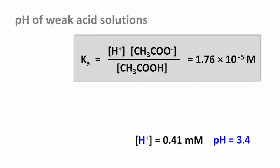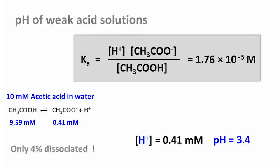In other words, the proton concentration is 0.41 millimolar. Now we can go back and calculate that acetate ions likewise will be at 0.41 millimolar, and that leaves 9.59 millimolar for the undissociated acetic acid. If we think about that, it's quite remarkable. 100% dissociation for hydrochloric acid, but only 4% for acetic acid.